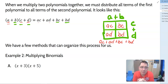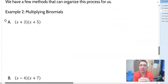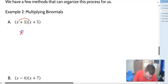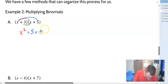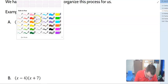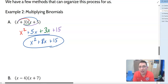Let's look at multiplying binomials. In example 2A, we've got X plus 3 times X plus 5. Using rainbows: X times X is X squared. X times positive 5 is plus 5X. 3 times X is plus 3X. And 3 times 5 is plus 15. We do have like terms to combine — 3X and 5X — giving us 8X. So the simplified answer is X squared plus 8X plus 15.